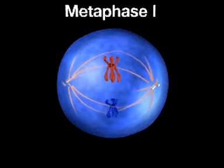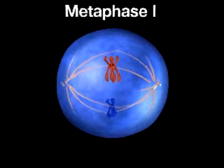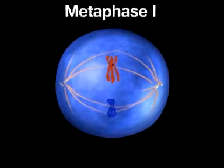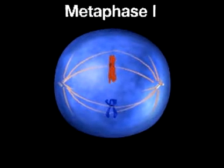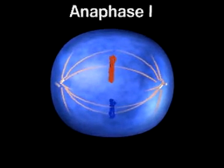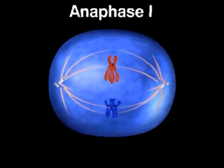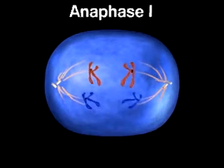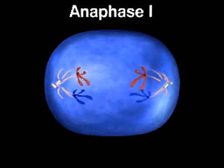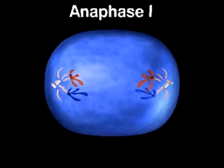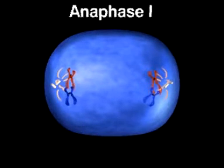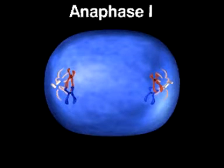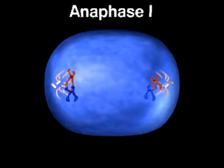During metaphase I, tetrads line up on the equator of the spindle. During anaphase I, homologous chromosomes separate and move to opposite ends of the cell. This critical step ensures that each new cell will receive only one chromosome from each homologous pair.